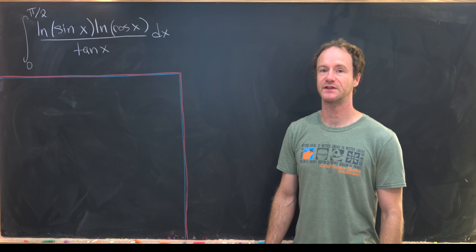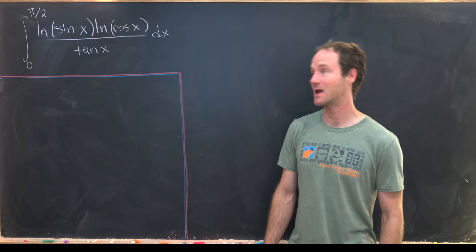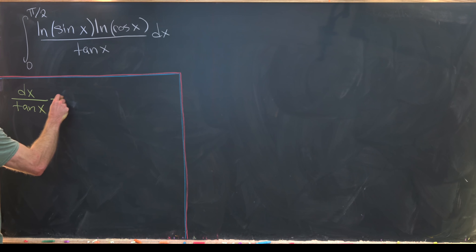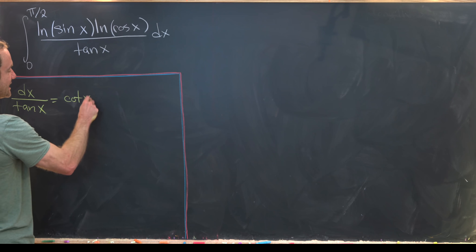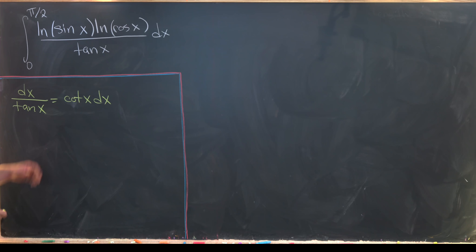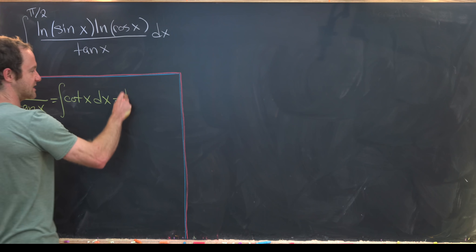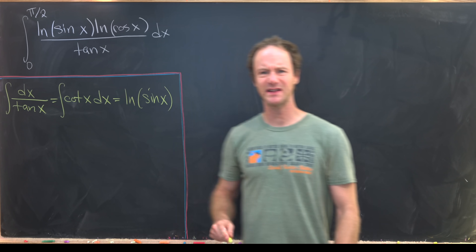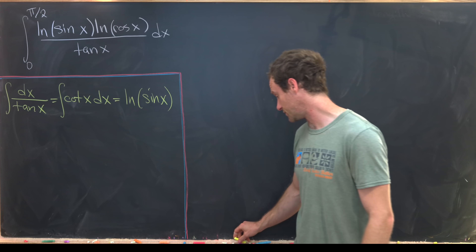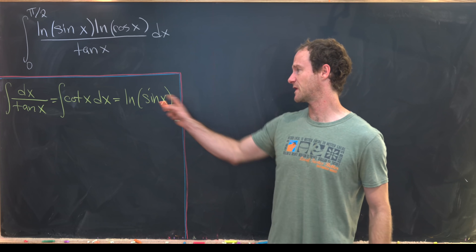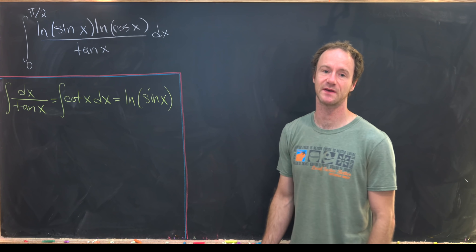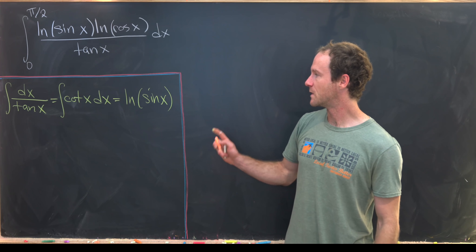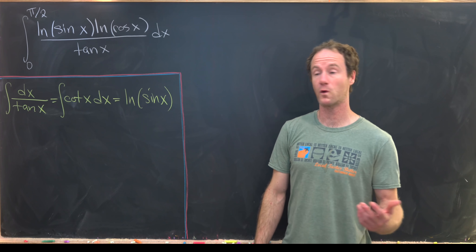We're going to start with a substitution, and it becomes a lot more obvious if we take the dx over tangent x term and rewrite it as cotangent of x dx. The antiderivative of cotangent is the natural log of sine of x — you can see that by standard u-substitution. So something like that should be second nature when approaching something this gnarly, and that sets us up for our substitution.